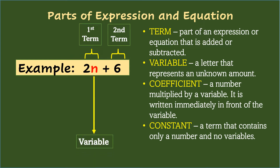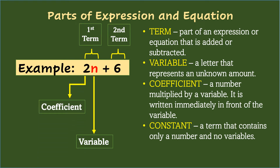Another part is the letter n, which is called a variable. A variable is any letter that represents an unknown amount. Next, the number 2 beside the variable n is called the coefficient — it is a number multiplied by a variable, written immediately in front of the variable. And the last part is the number 6, called the constant. A constant is a term that contains only a number and no variables.